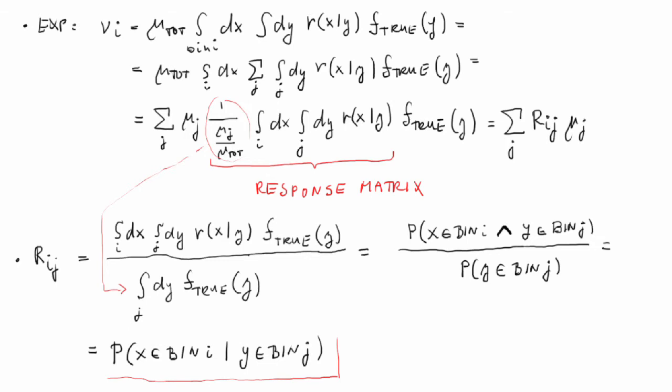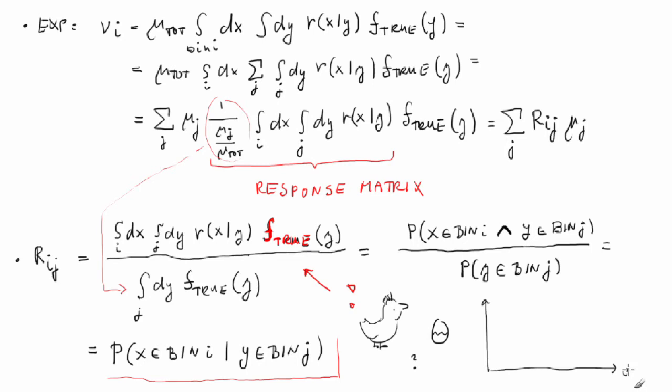The unfortunate thing about the response matrix is that it depends on f_true(y) — on the distribution that we want to determine with the unfolding procedure. So this looks pretty much like the chicken and egg problem: we need the pdf in order to measure it. The key and unavoidable approximation in the unfolding procedure is the assumption that the response function is approximately constant in each bin j. Once this is true, R_{ij} doesn't depend on f_true(y). Of course, we will have to assign the unfolding result a systematic uncertainty due to this assumption.